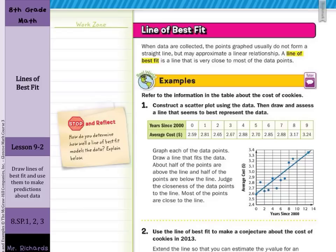In guided example 1, refer to the information in the table about the cost of cookies. Construct a scatter plot using the data. Then draw and assess a line that seems to best represent the data. And so you see in our table years since 2000, 0, 1, 2, 3, all the way up to 9, ended up on our x-axis, with our average cost being on our y-axis. Each data point was graphed, and then a line was drawn in that kind of goes in between all the data points.